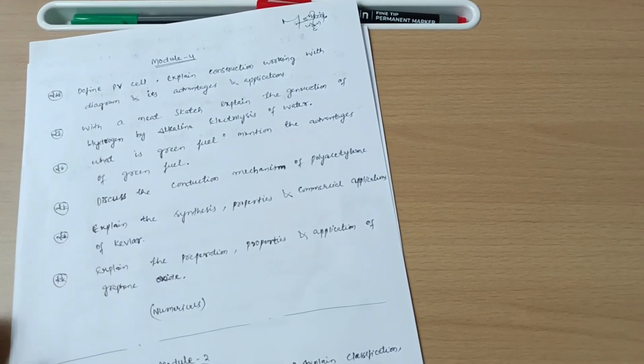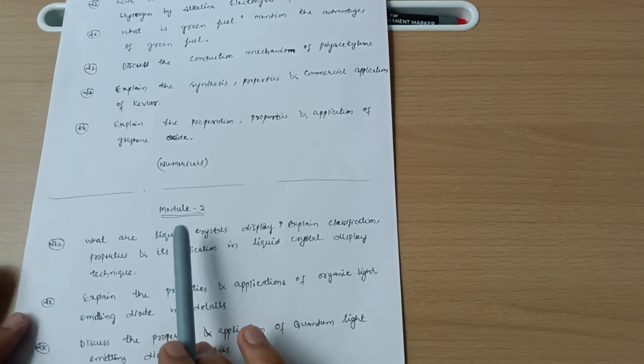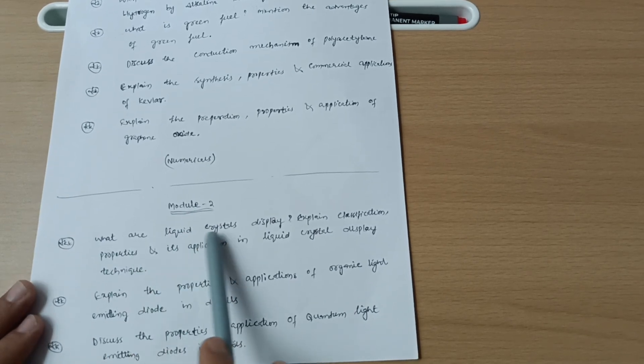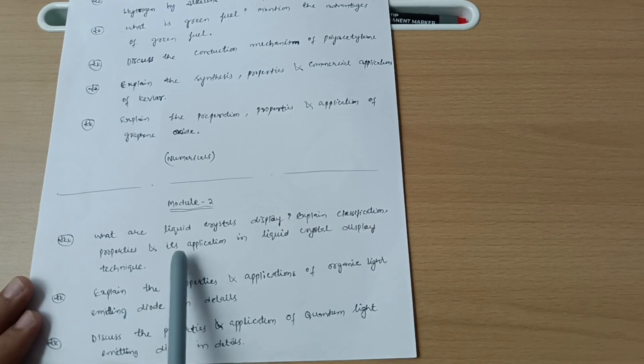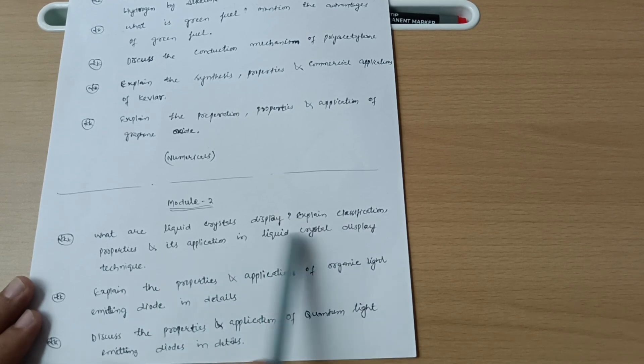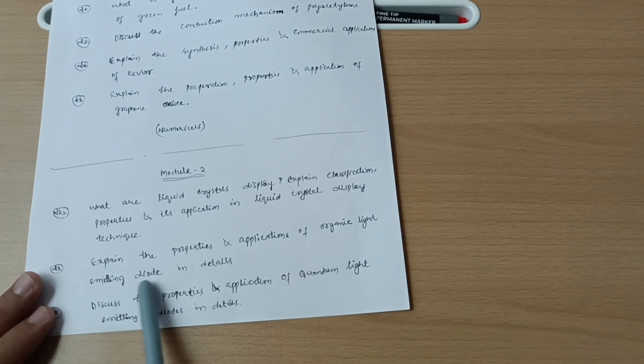Now if I talk about module second, you have to cover questions like what are LCD liquid crystal displays? Explain classification, properties, and its application in liquid crystal display technique. Explain the properties and applications of organic light emitting diode in detail. Discuss the properties and applications of quantum light emitting diodes in details.